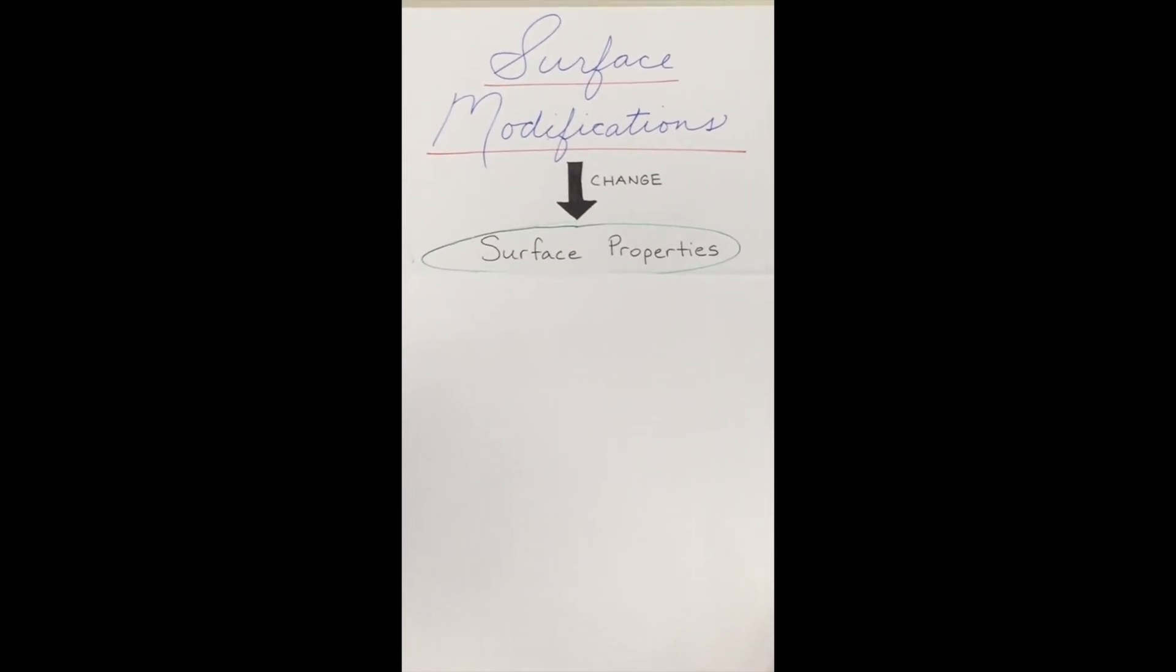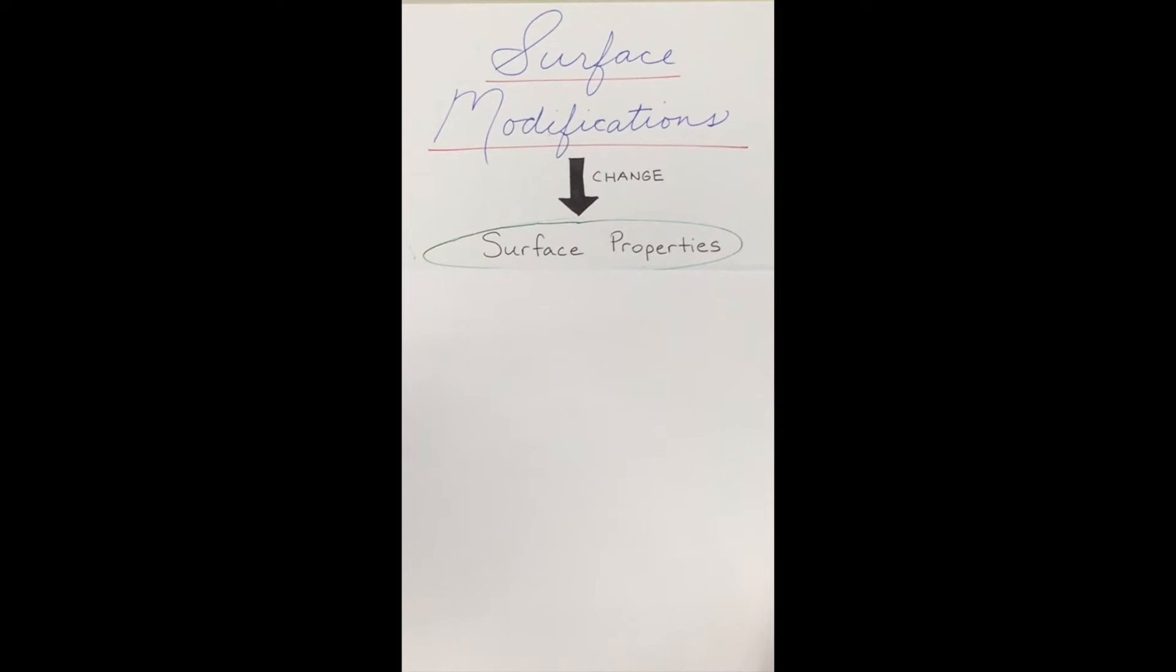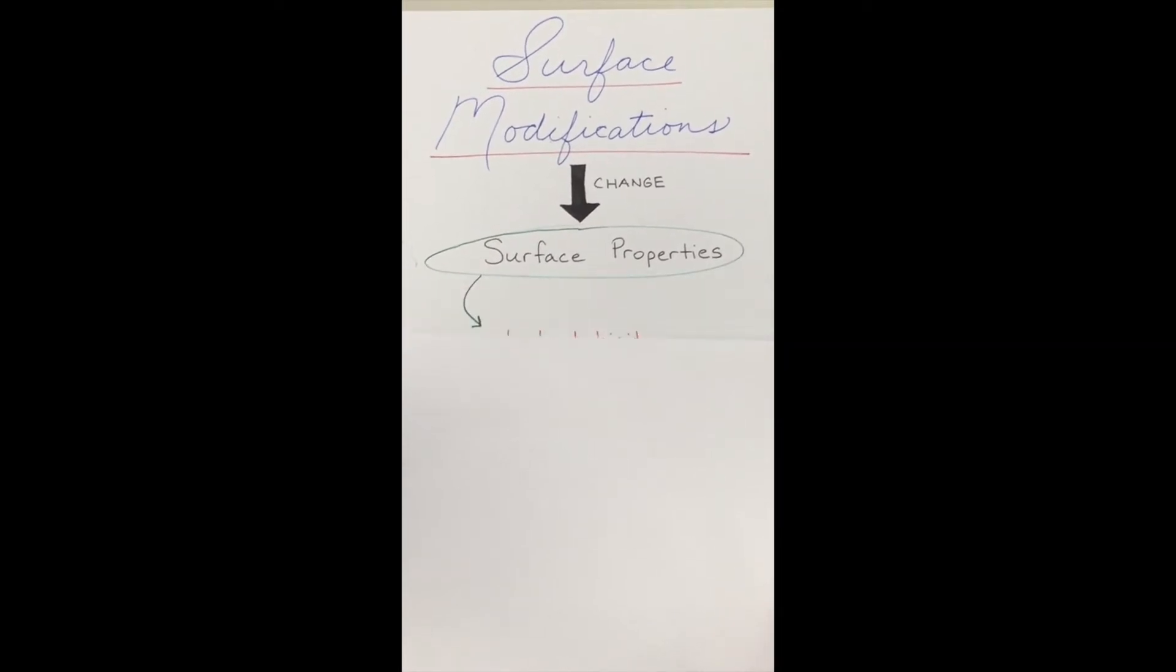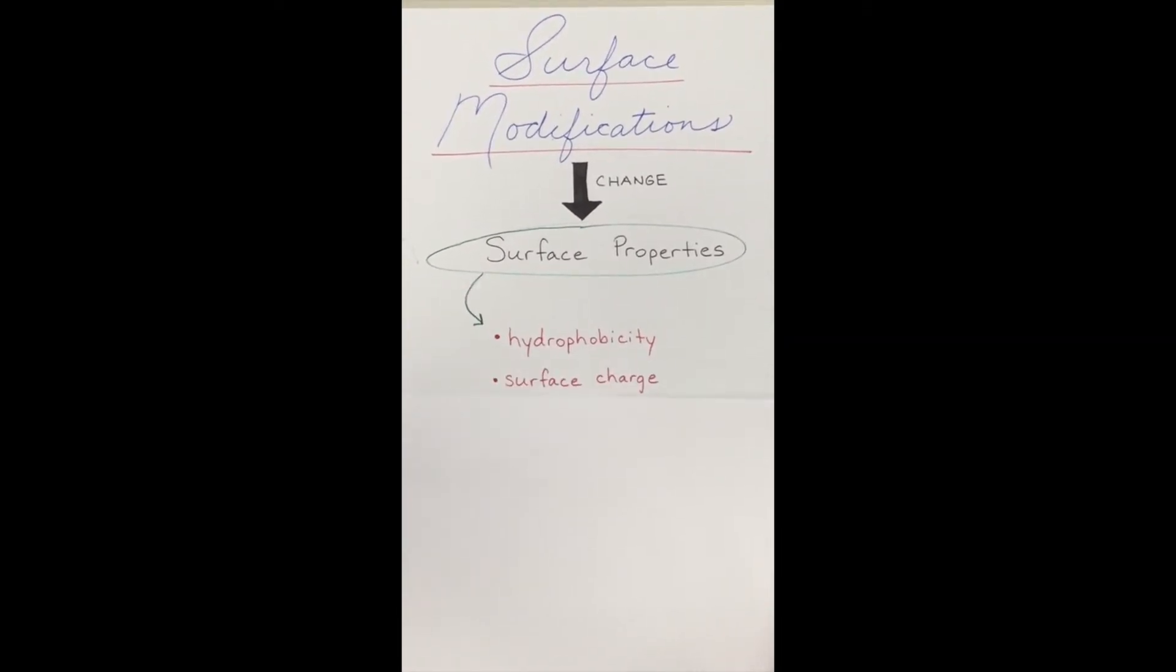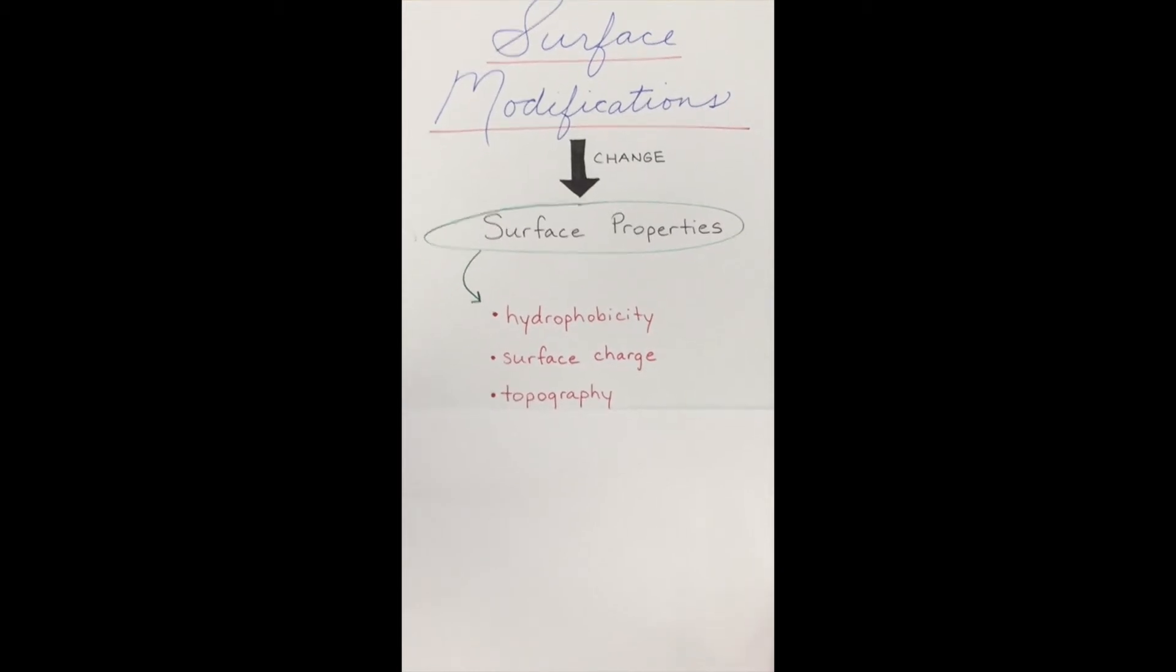Surface properties are essentially a characteristic of the surface. We will focus on three main properties: hydrophobicity, surface charge, and topography.